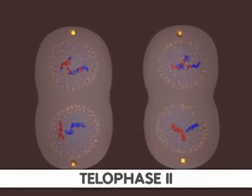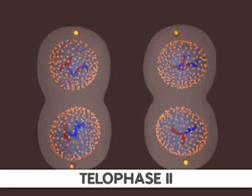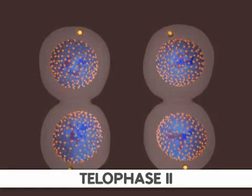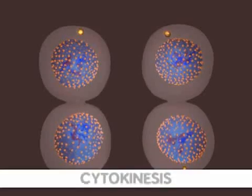In telophase II, the nuclear membrane reforms and the cytoplasm is divided into the two haploid daughter cells. This division is called cytokinesis.